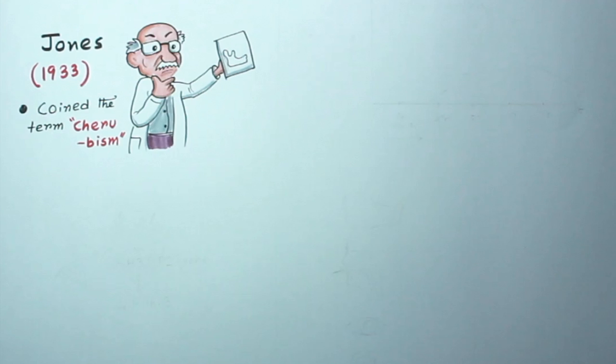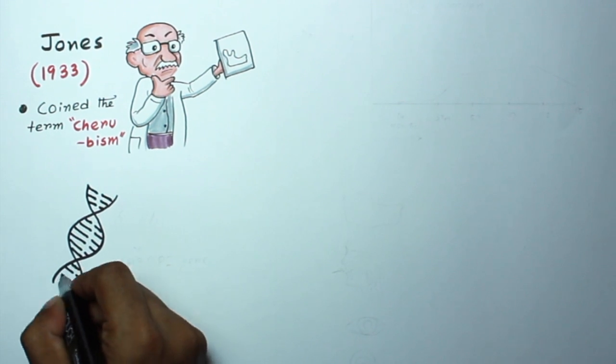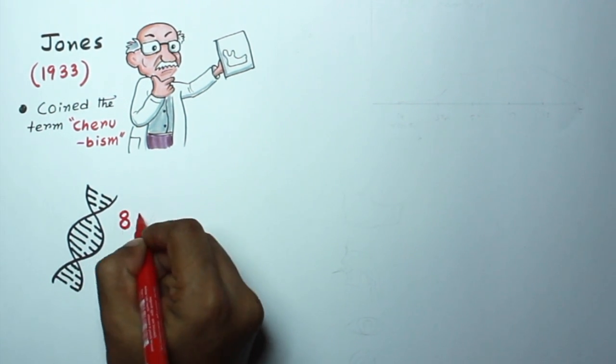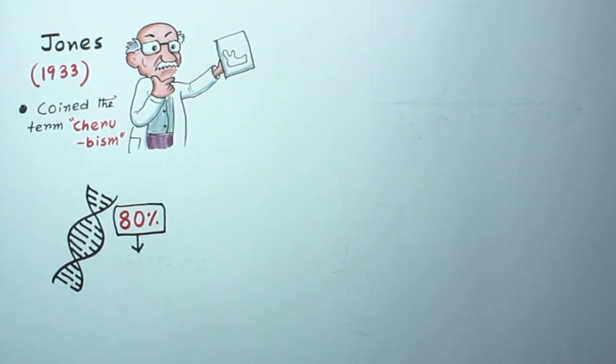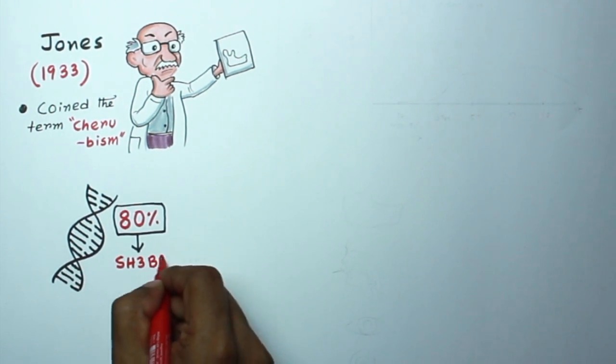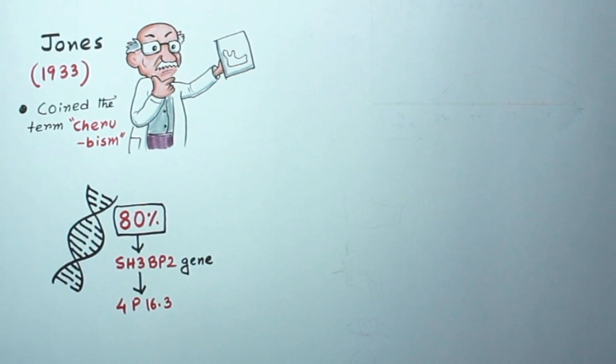Let's discuss some points about genetics. Till now, more than 300 cases have been reported in the literature. It is shown that in 80% of cases, there is a gain-of-function mutation in the SH3BP2 gene on chromosome 4p16.3. It is an autosomal dominant condition, though in some cases there is no family history.